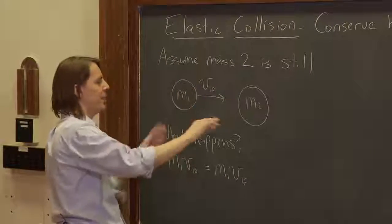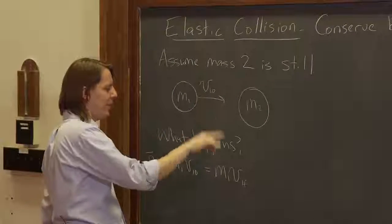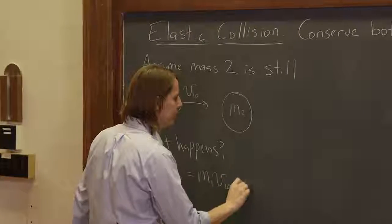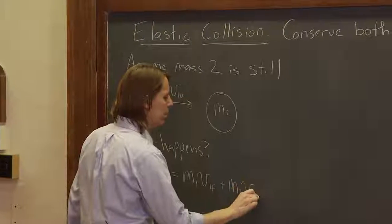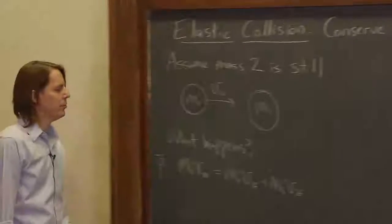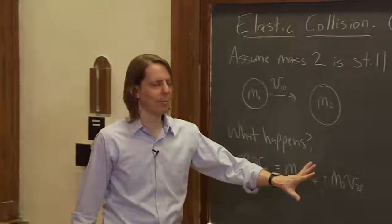I didn't draw it, but you know what's going to happen. They're both going to move. So mass one V1f plus now mass two might move. It will almost certainly move. Mass two times V2f. So we get that equation from conserving momentum.